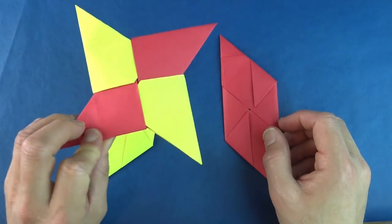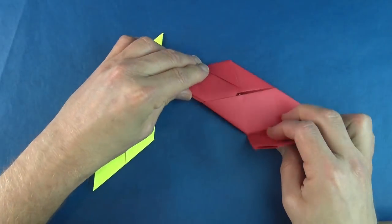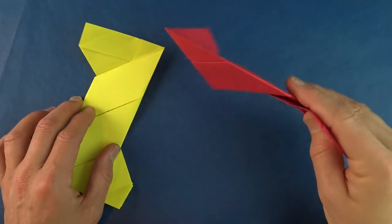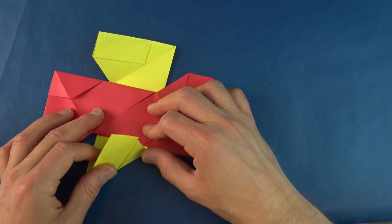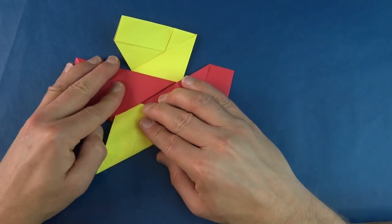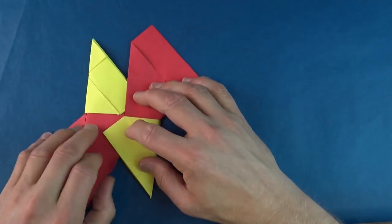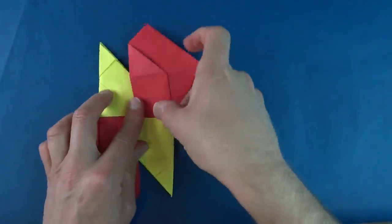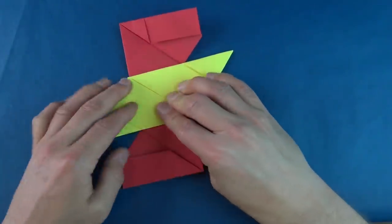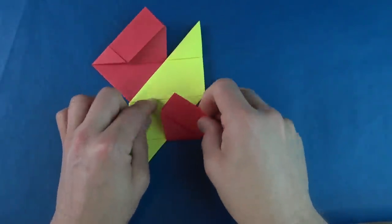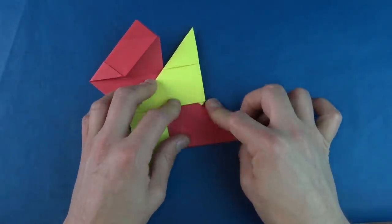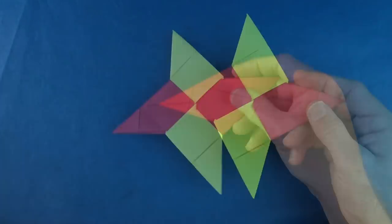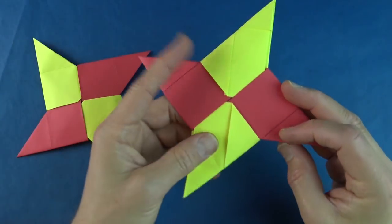Now to turn this into the ninja star, all we have to do is pull them apart and turn this one over and put it on top here. And now slip this under this flap. And rotate, and this goes under this flap. And turn over. And this goes into this pocket. And this goes into this pocket. And it looks almost as cool as this one, and it almost flies as good too.